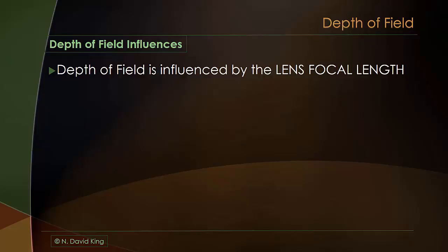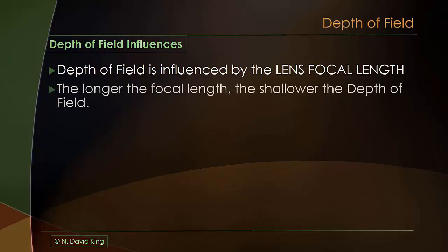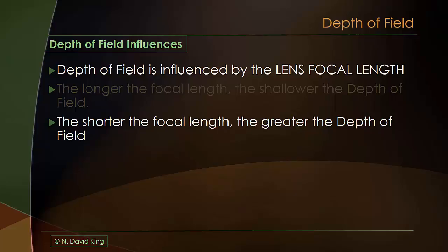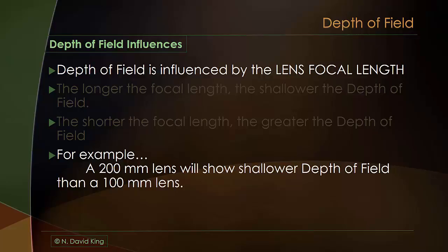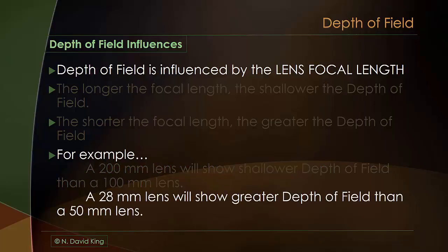Depth of field is also influenced by lens focal length. The rule is straightforward: the longer the focal length, the shallower the depth of field; conversely, the shorter the focal length, the greater the depth of field. A 200mm lens is going to show shallower depth of field than a 100mm lens, everything else being equal — same focal distance, same aperture setting. But a 28mm lens will show greater depth of field than a 50mm lens, again, everything remaining the same.